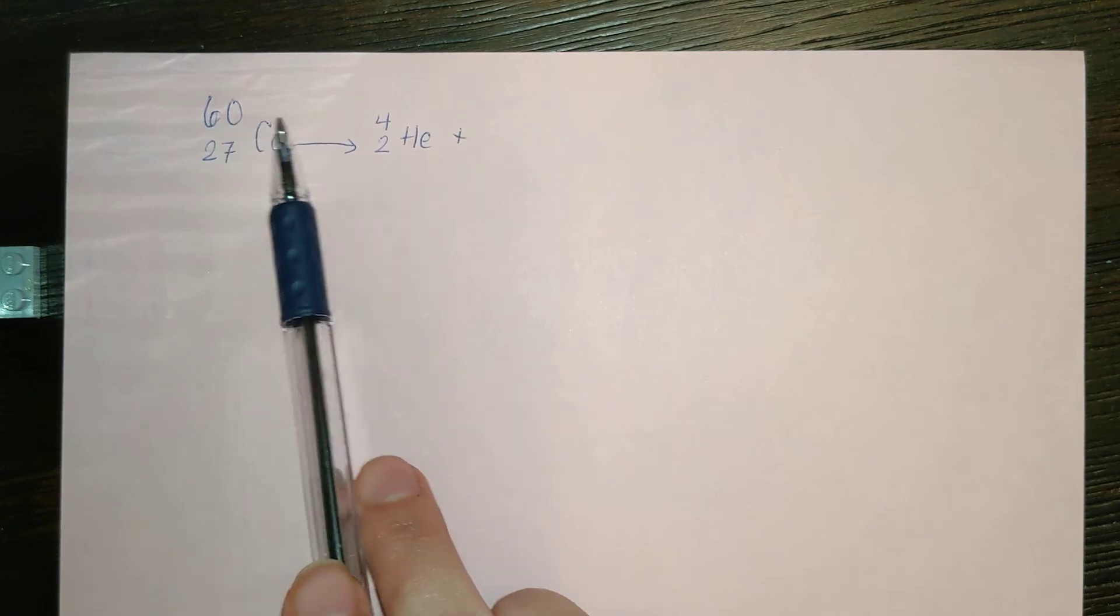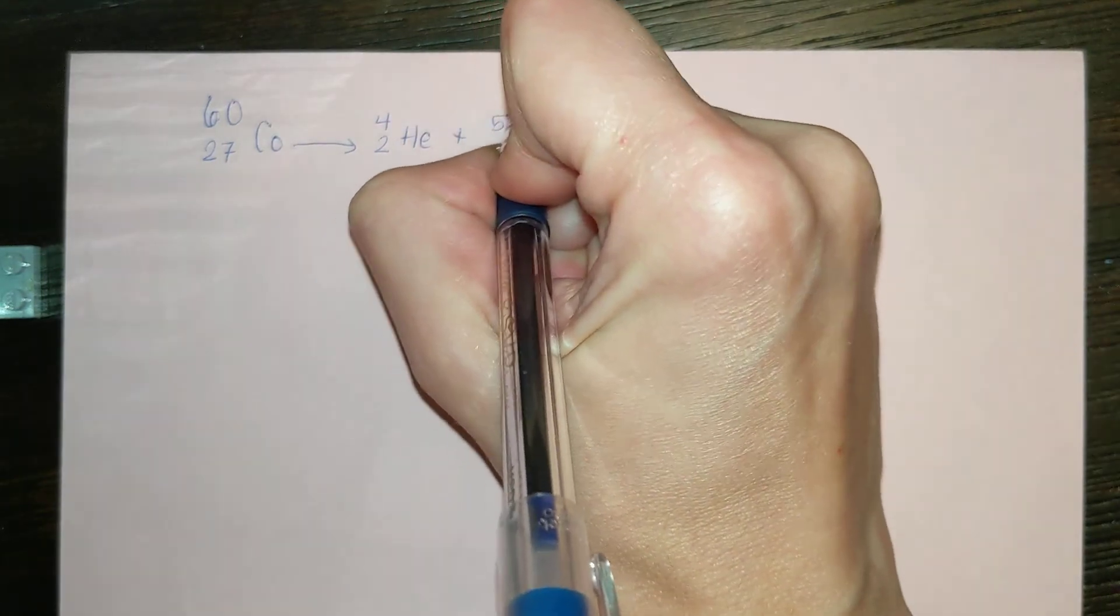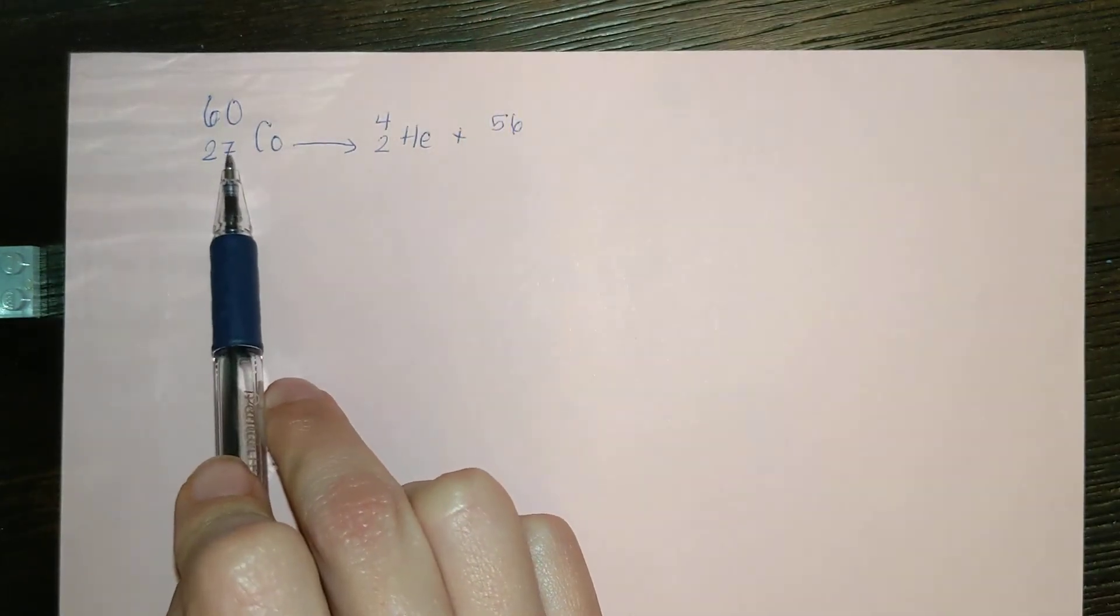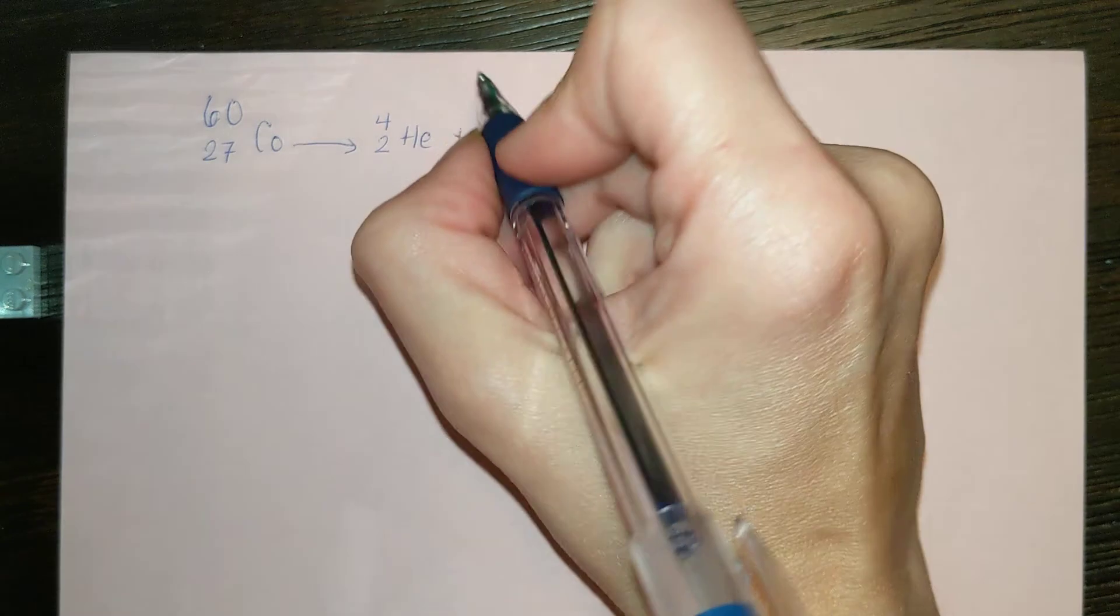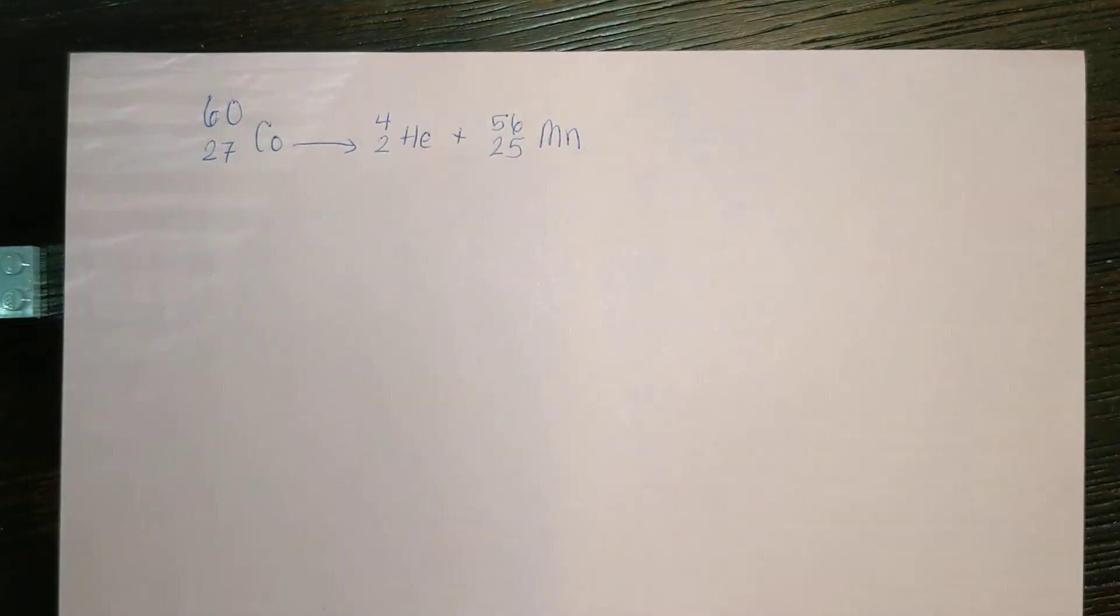If it's an alpha decay, we have 60 subtract the four particles that went here, give us 56. We have 27 subtract our two particles that went here, give us 25, and this is Mn or manganese.